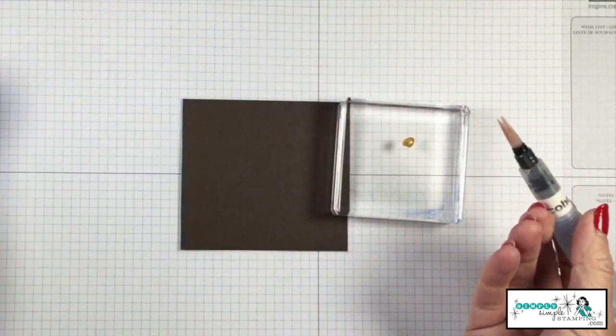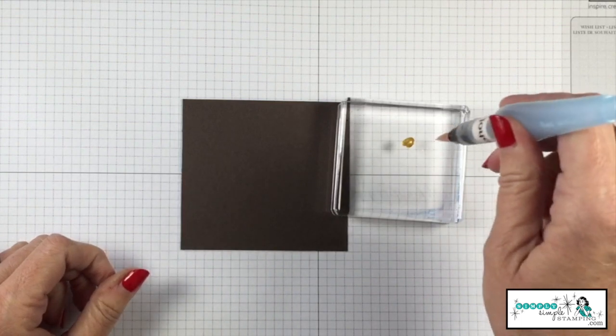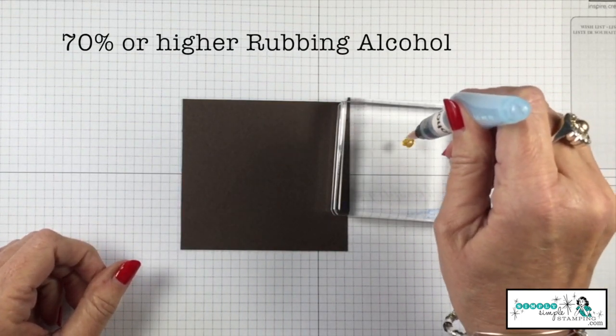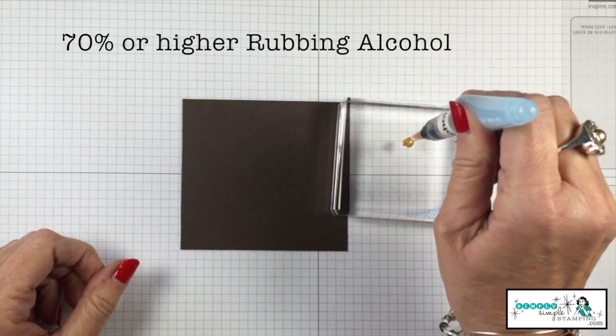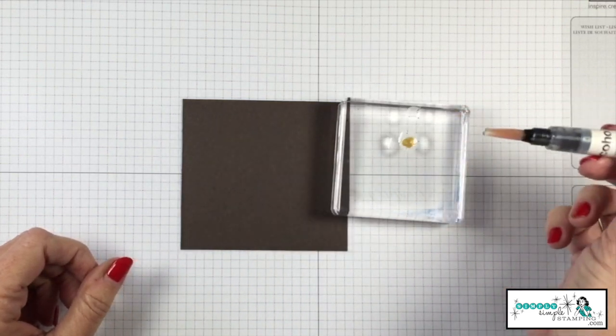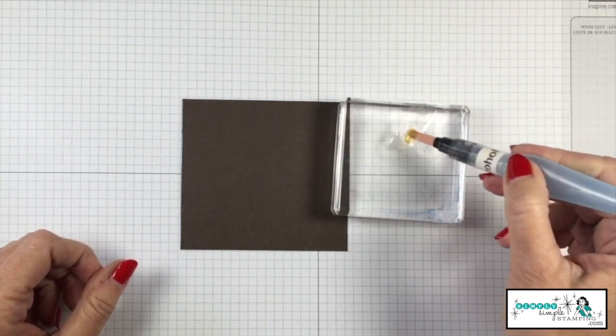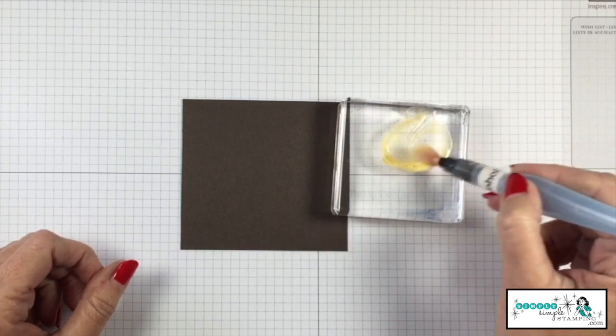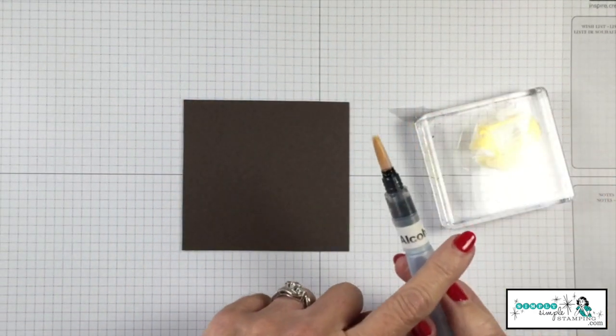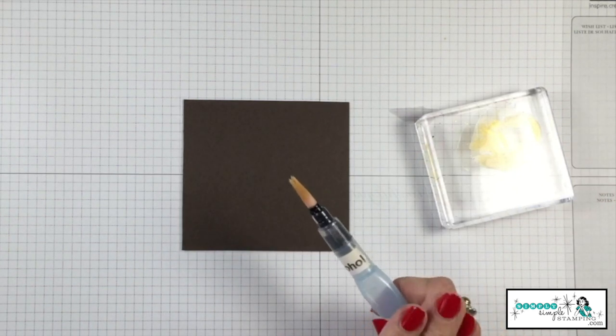I've now got my aqua painter and as I said, it is filled with rubbing alcohol. I'm going to give this a squeeze and I'm going to press some of that rubbing alcohol onto, I've got about three drops I guess, into that shimmer paint. We're just going to give that a nice little mix. So it is very saturated with rubbing alcohol and shimmer paint.